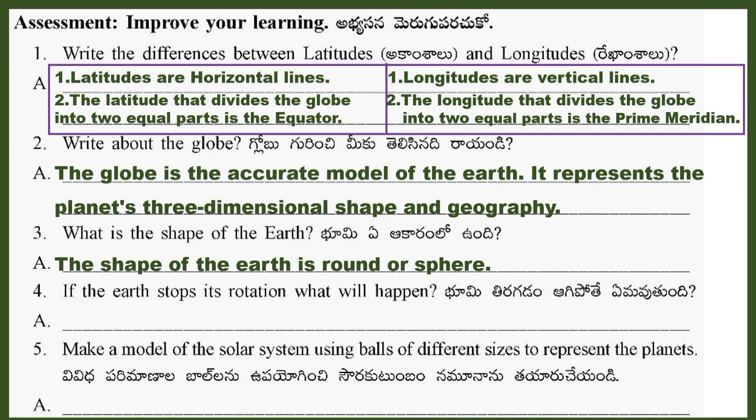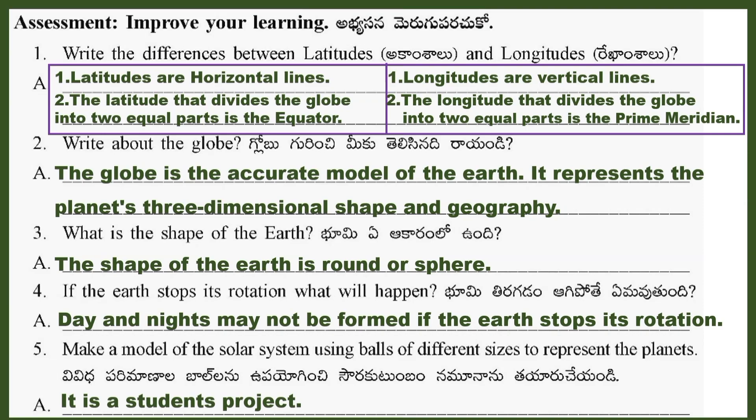Question 4: If the Earth stops its rotation, what will happen? Answer: Day and nights may not be formed if the Earth stops its rotation.